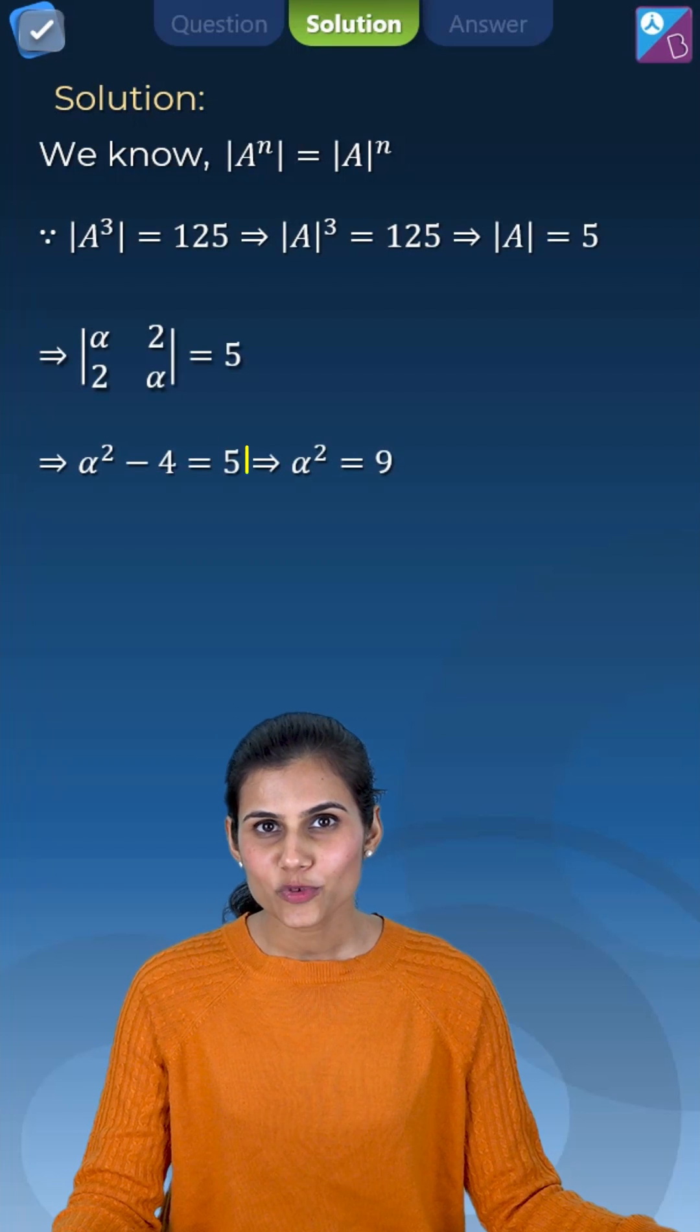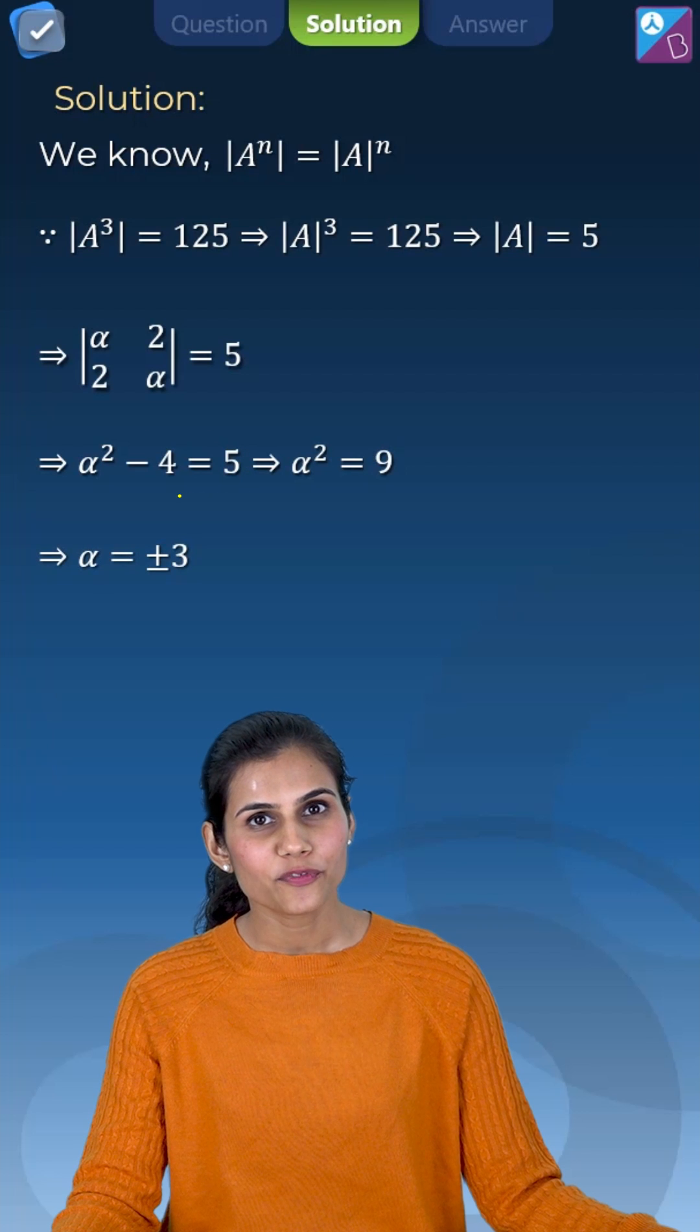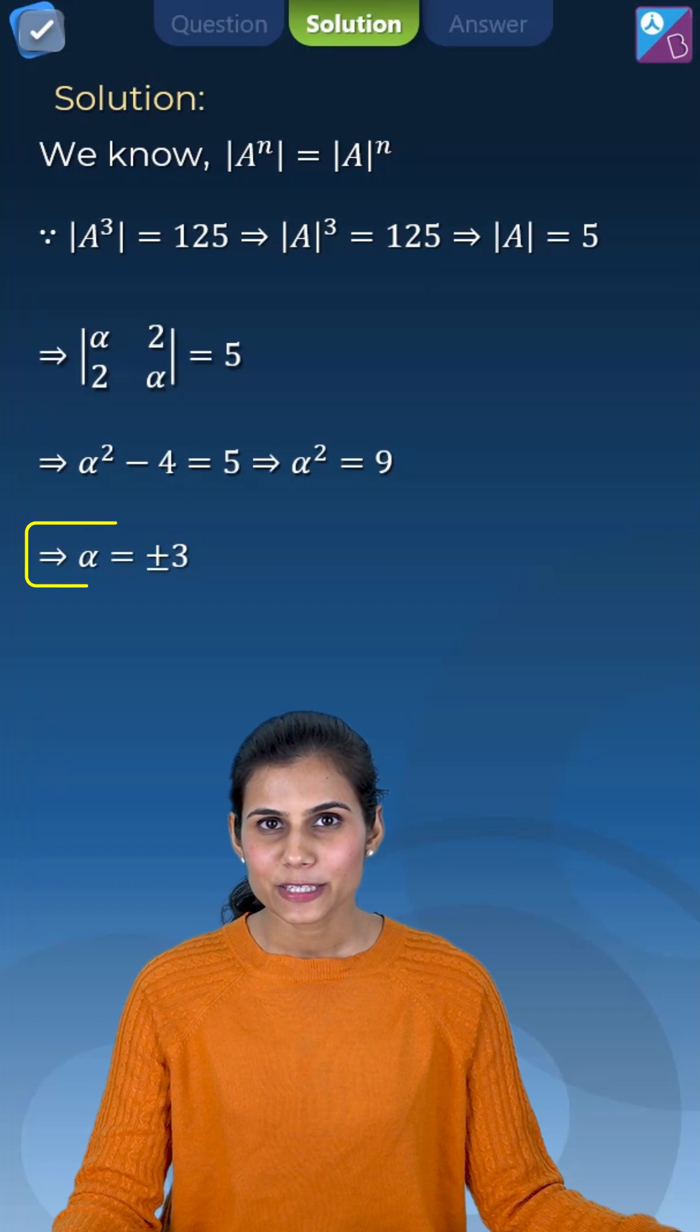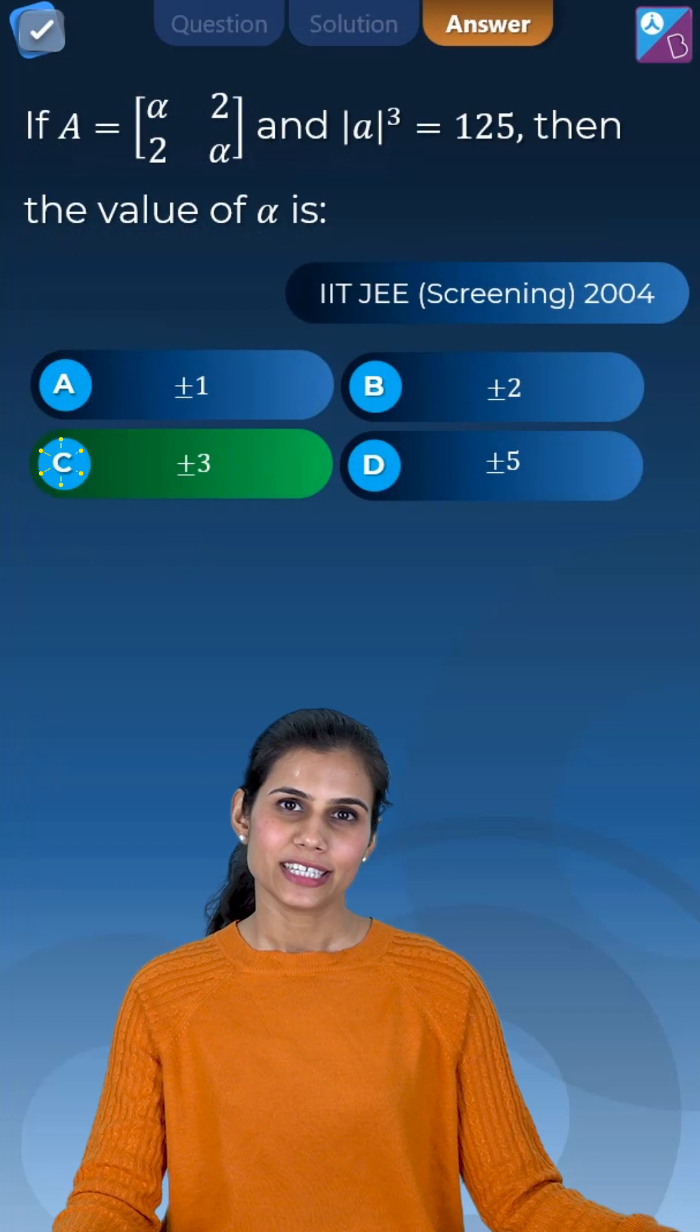So what do you get? Alpha square minus 4 is equal to 5, thereby implying that alpha is nothing but plus minus 3, sitting in option C.